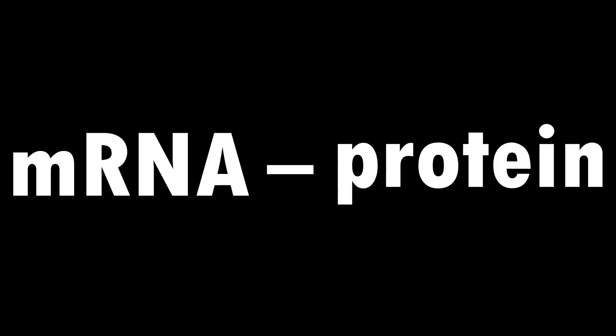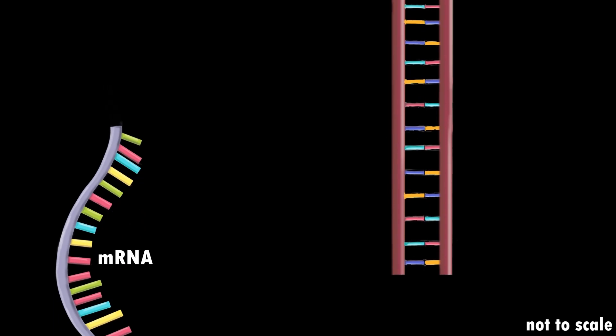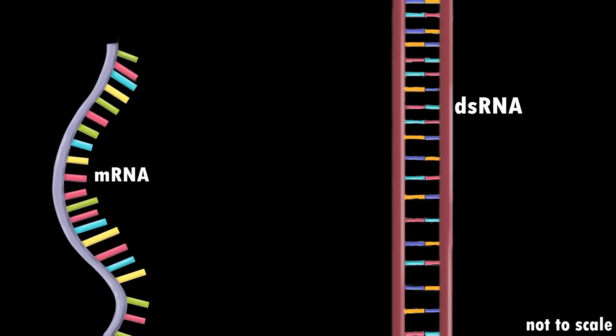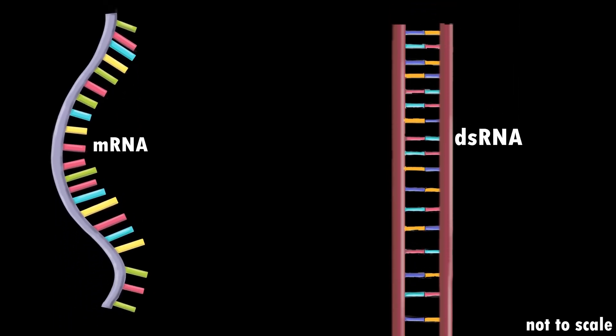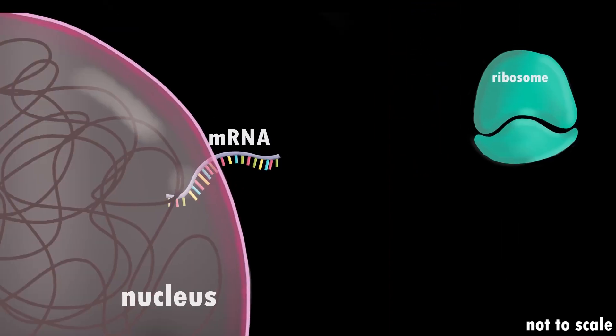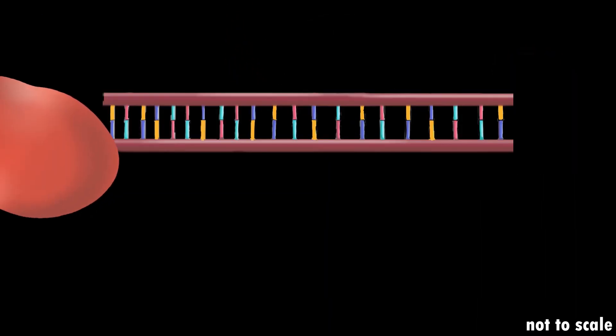RNA interference is a mechanism that interferes with messenger RNA. If the mRNA is not translated, the protein is not made. But how? We design a double-stranded RNA that is homologous to the mRNA made from the gene, and we introduce it into the cell.